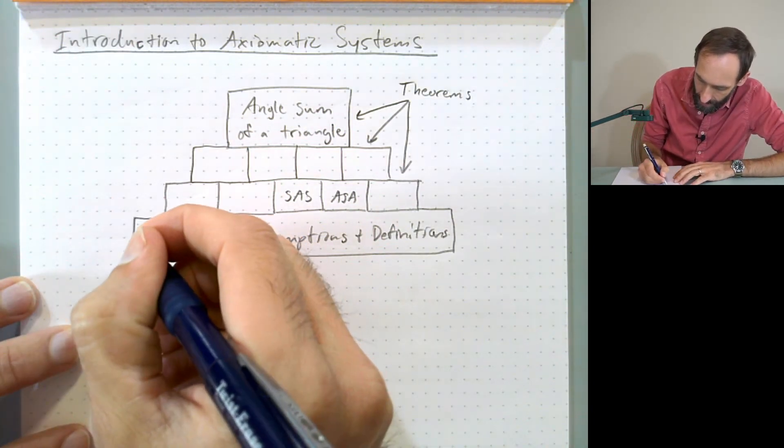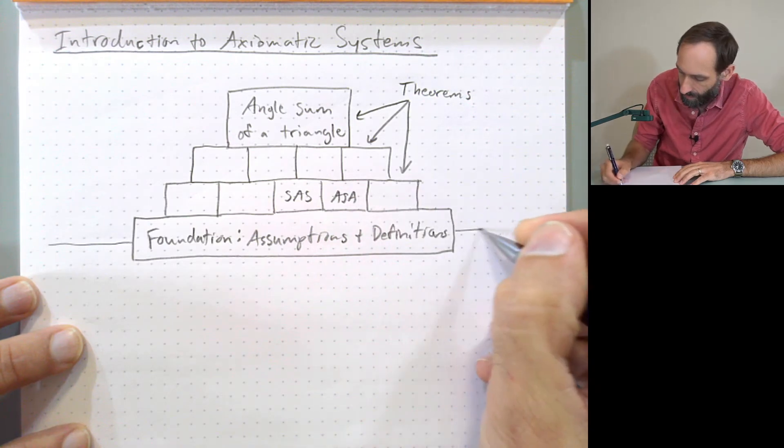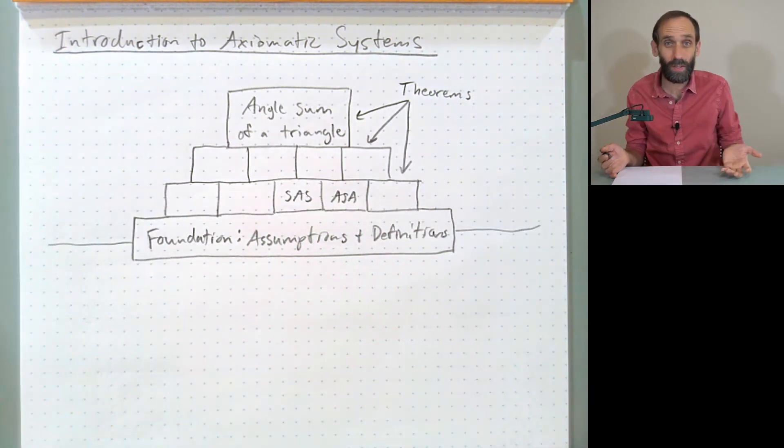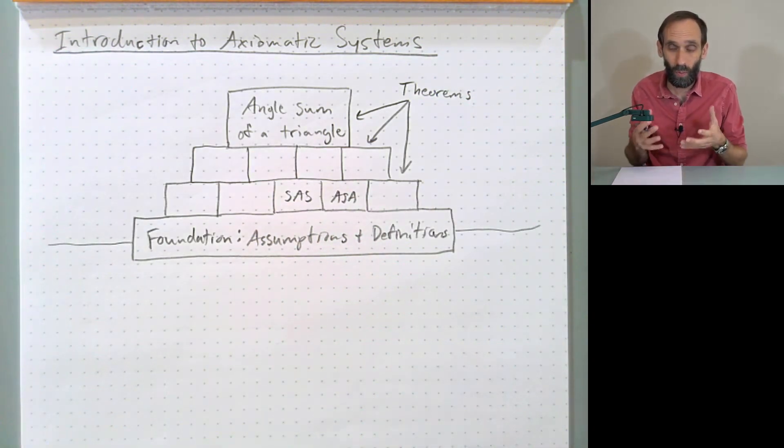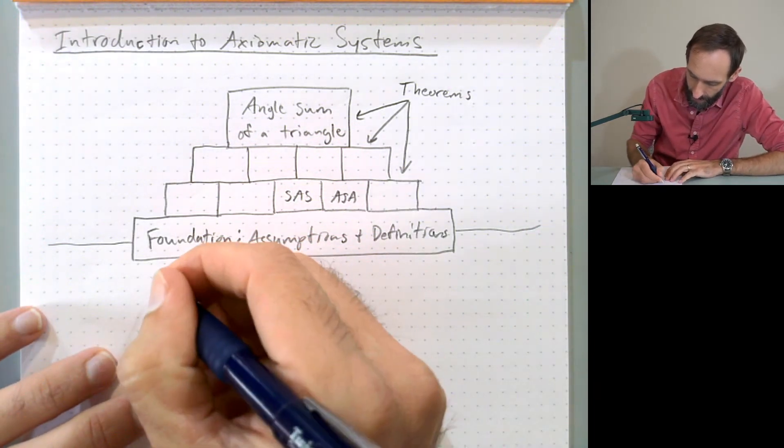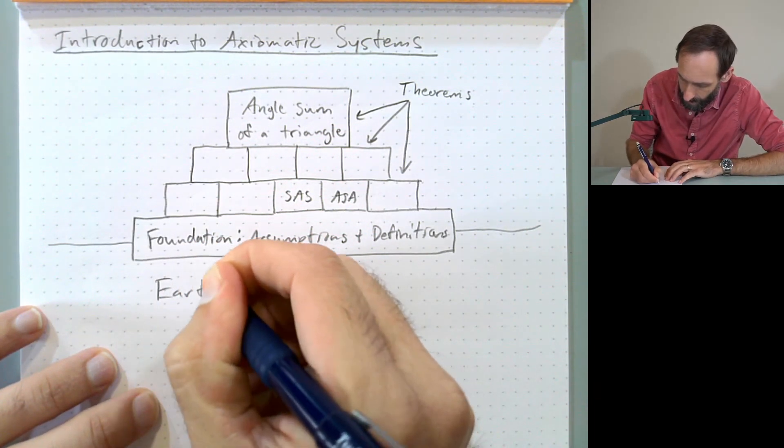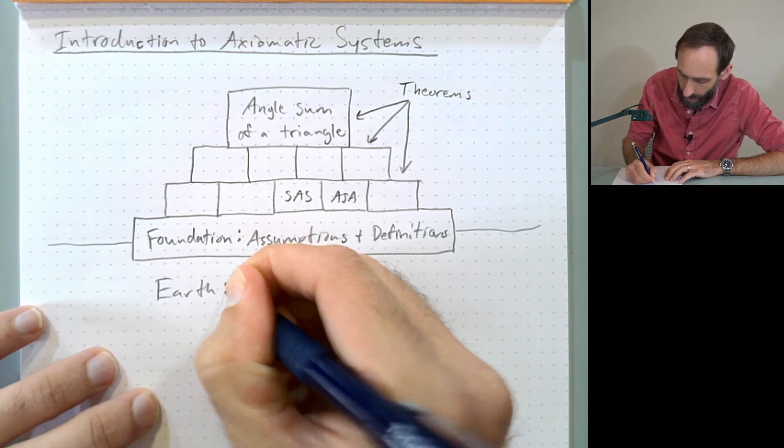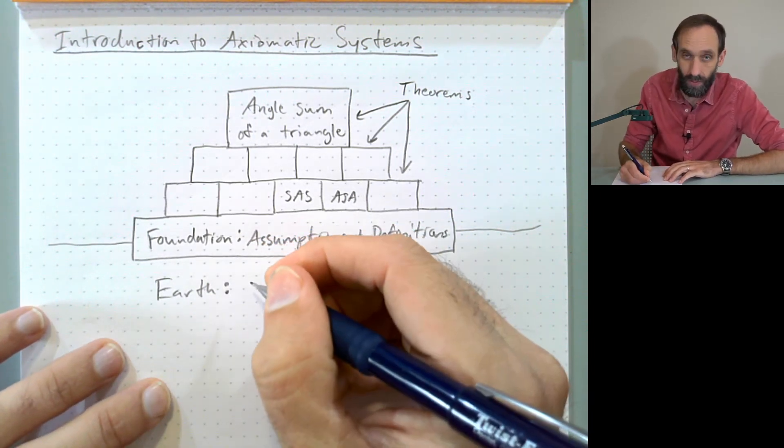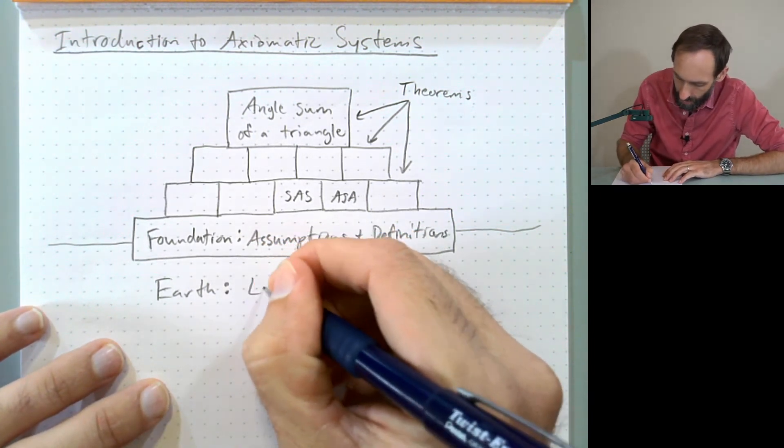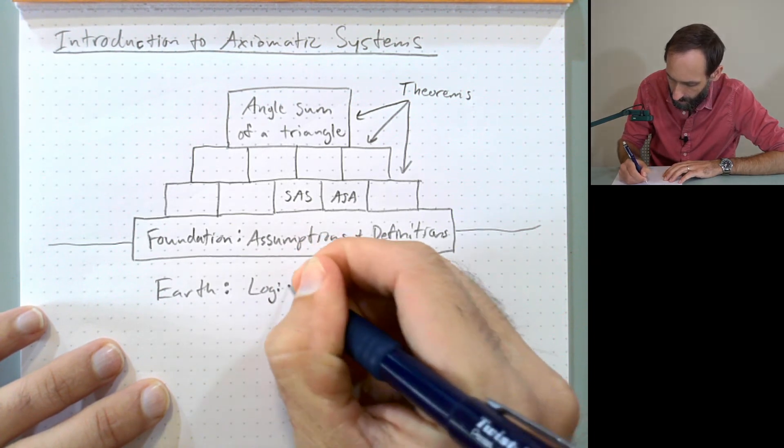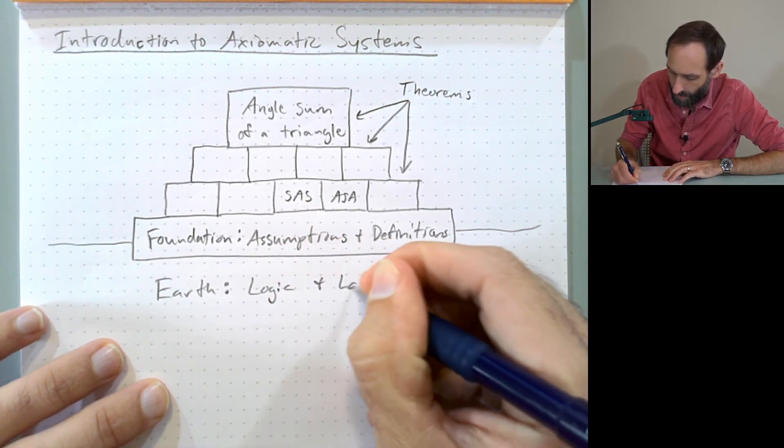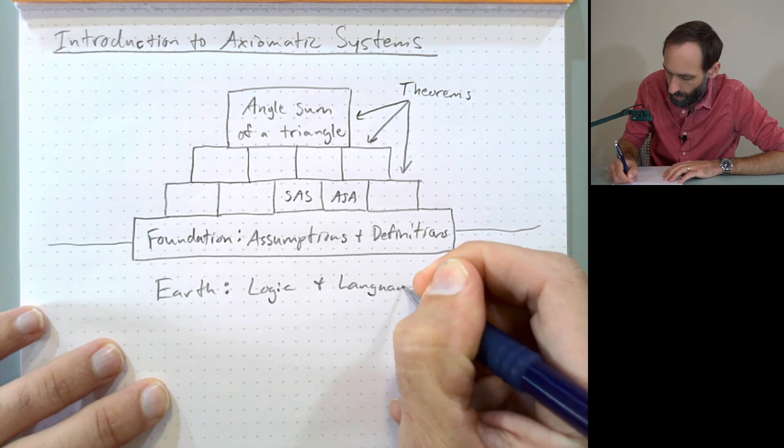So for us, the earth is the base level foundation where it all starts. And so in our analogy here, what is the earth, what is all this sitting in? And for us, the earth is going to be logic and language.